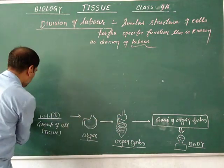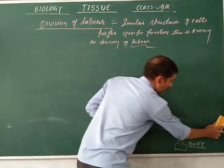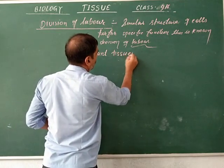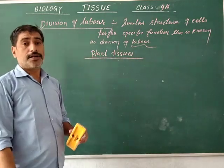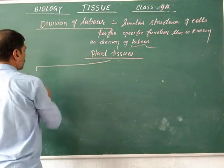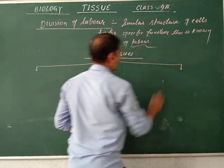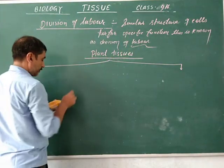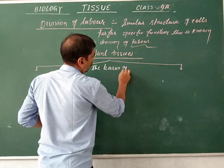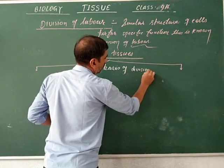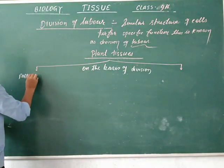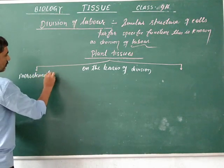Now let us know about plant tissue. On the basis of division, plant tissue is divided into two groups: the first is meristematic tissue and the second is permanent tissue.